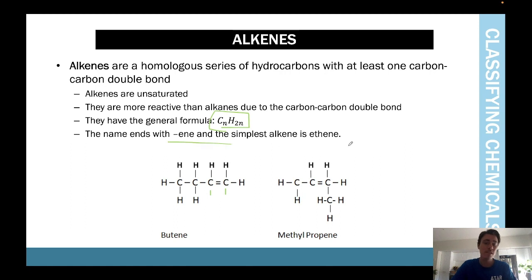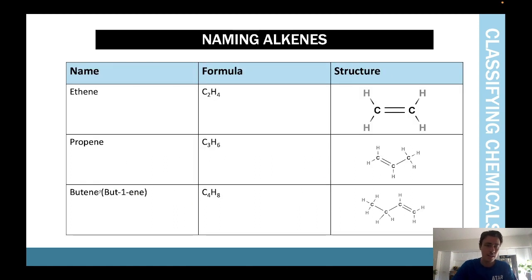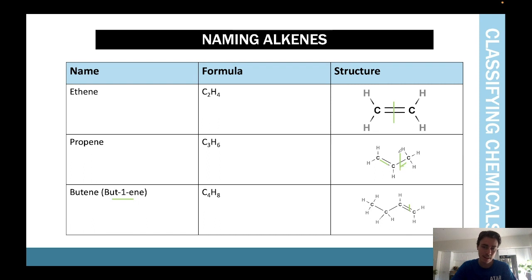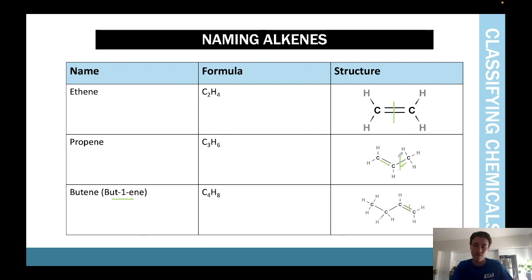The name of an alkene ends with 'ene' and you need to number where the double bond is. For example, 'but-1-ene' means the double bond is at the first carbon. For shorter chains where there's only one possible position, no number is needed. You always number from the end closest to the double bond.